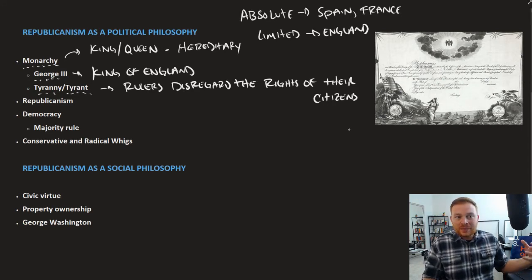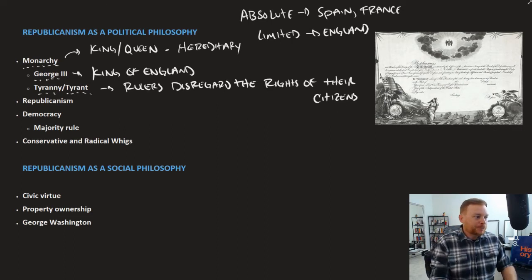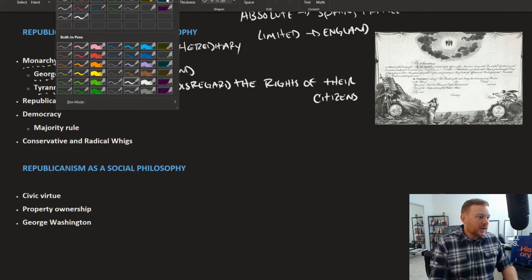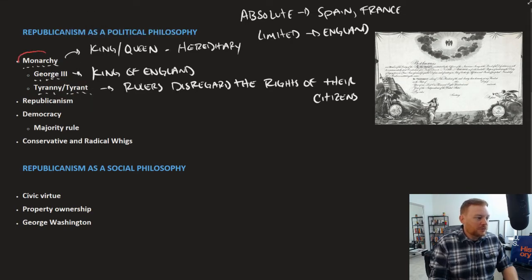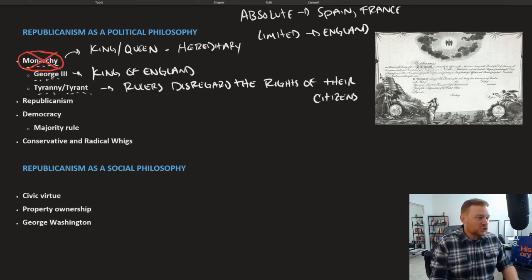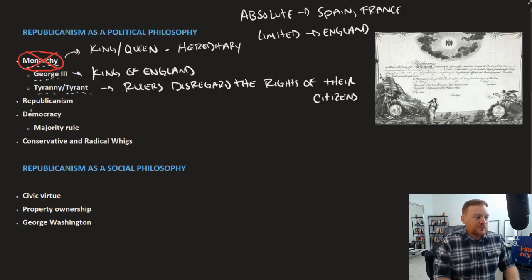When the war was won by the colonial side, practically nobody was advocating for a monarchical government. Most of the founding father types could agree that monarchy was not the way to go. The main discussion really centered around two different types of governments: republicanism and democracy.